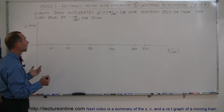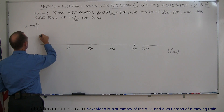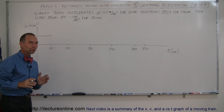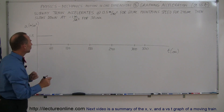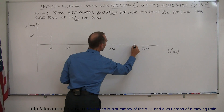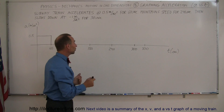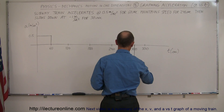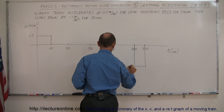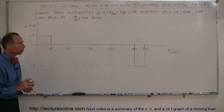So what does that graph look like? For the first 60 seconds it's accelerating at 0.5 meters per second squared, so it should look like this, and this would be 0.5. Then for the next 240 seconds it maintains the same speed, so acceleration is zero — the graph drops down to zero and stays at zero until we reach this point, and at that point it decelerates, so acceleration is now negative: minus 1 meter per second squared, and it goes down like that.